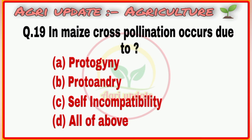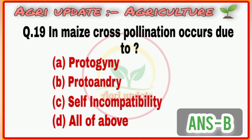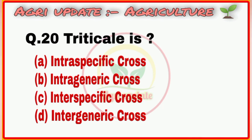Question number 19: Which mechanism prevents self-pollination? Options include self-incompatibility and protandry. The right answer is option number B, protandry.